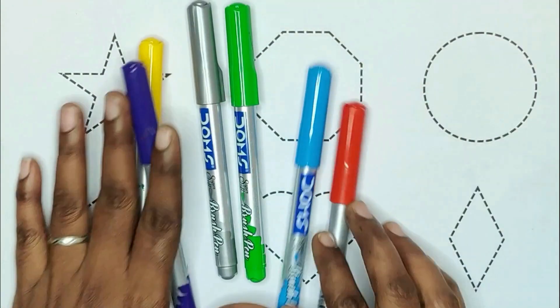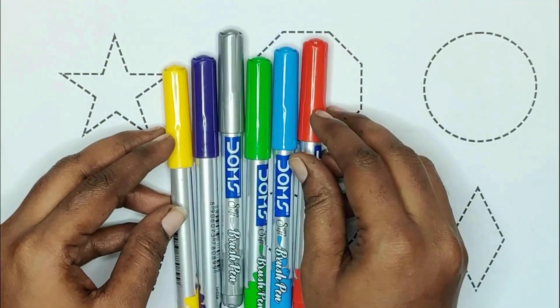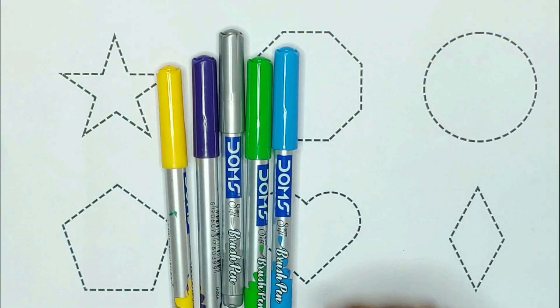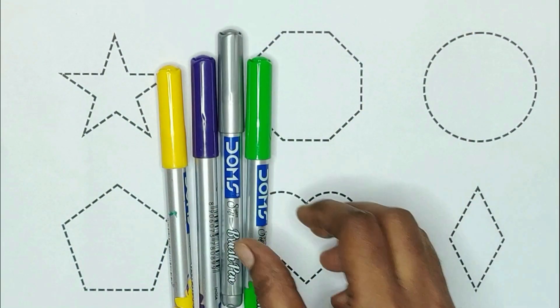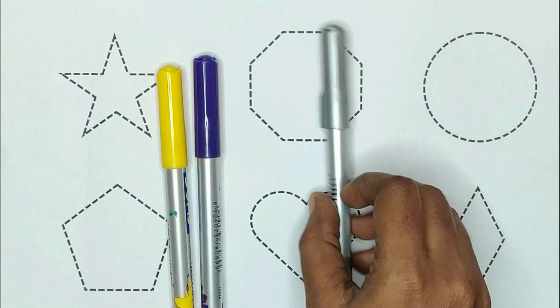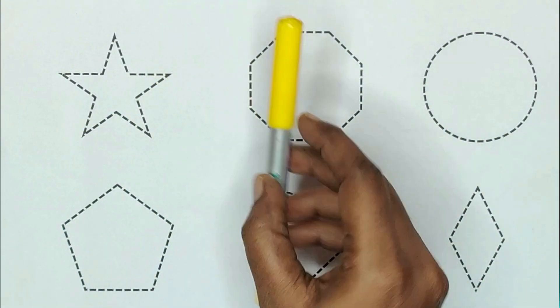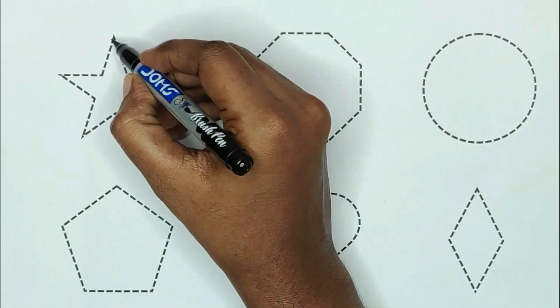Today we are learning shapes with colors. Red color, blue color, green color, gray color, violet color, and yellow color.